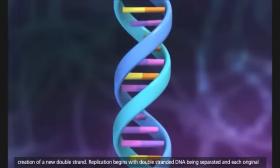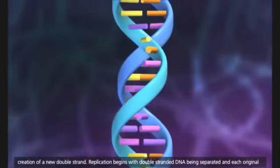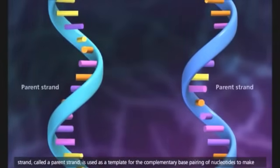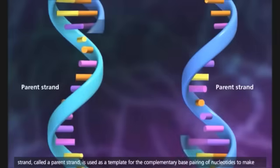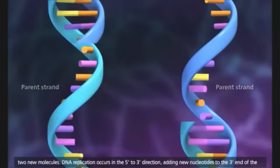Replication begins with double-stranded DNA being separated, and each original strand, called a parent strand, is used as a template for the complementary base pairing of nucleotides to make two new molecules.